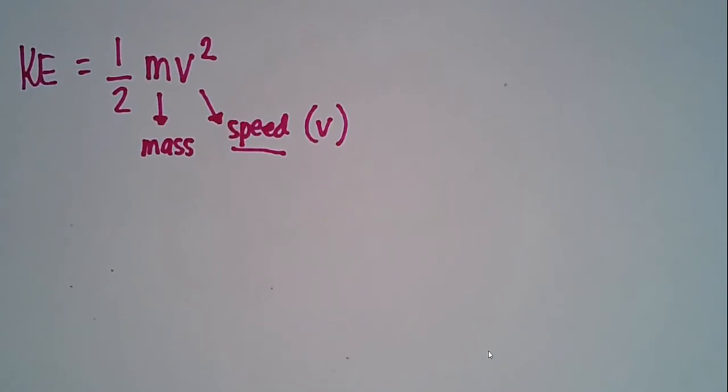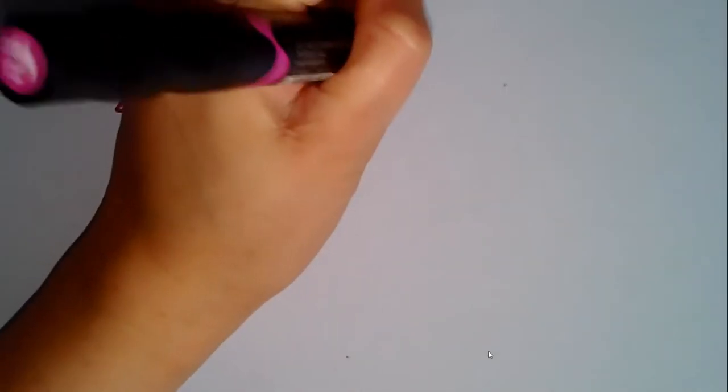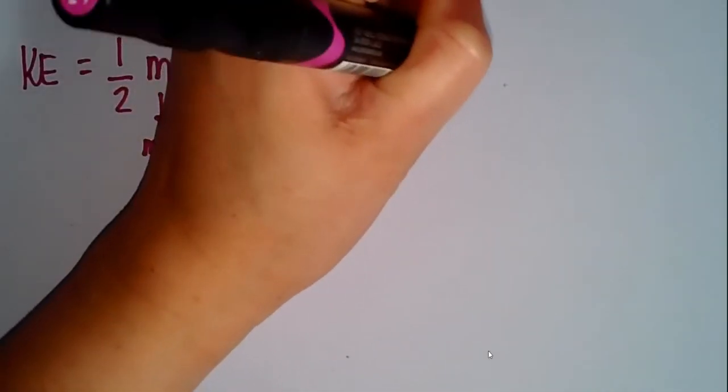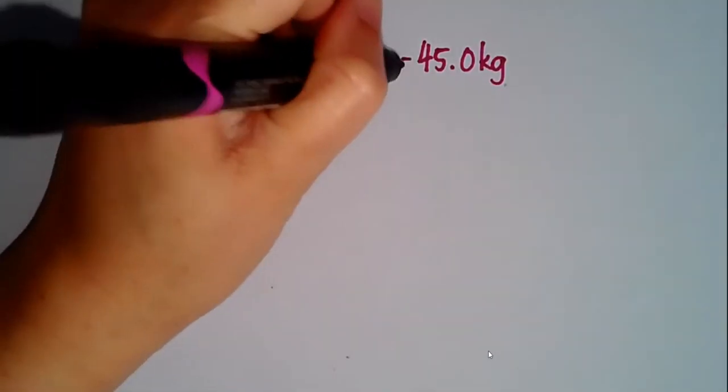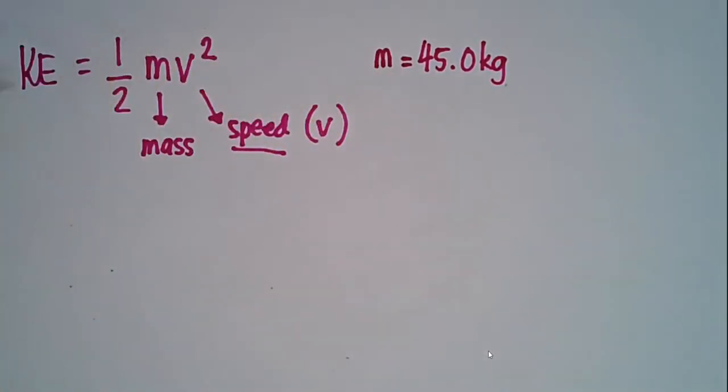So what I just read: what is the kinetic energy of a 45 kilogram object? We can just go ahead and write that down—45 kilogram object. The unit is telling us that that is the mass of the object.